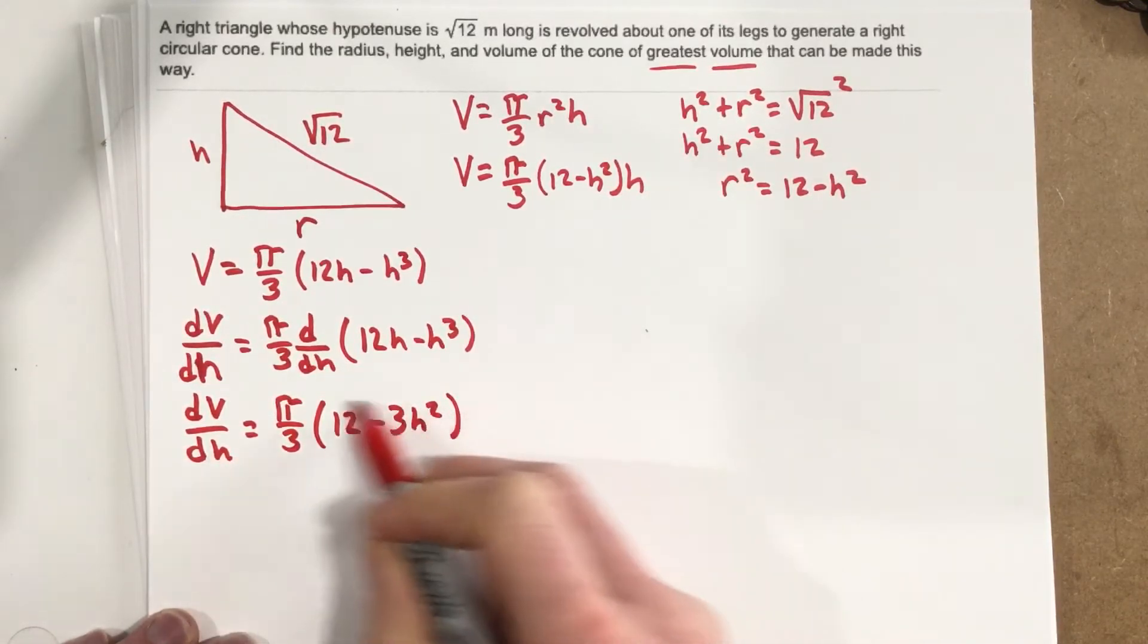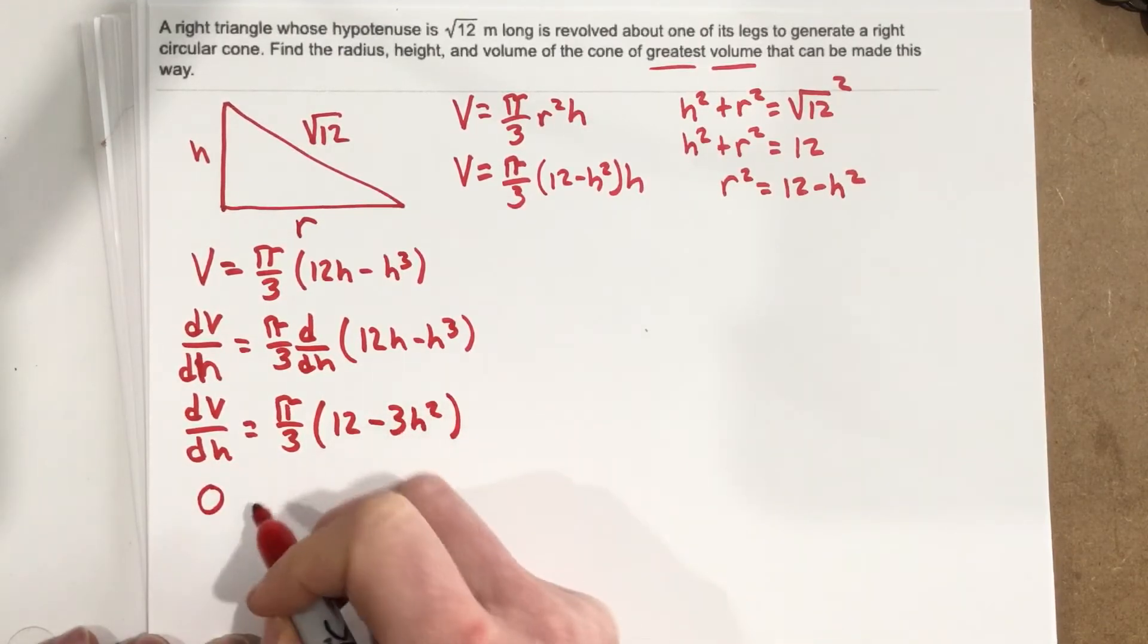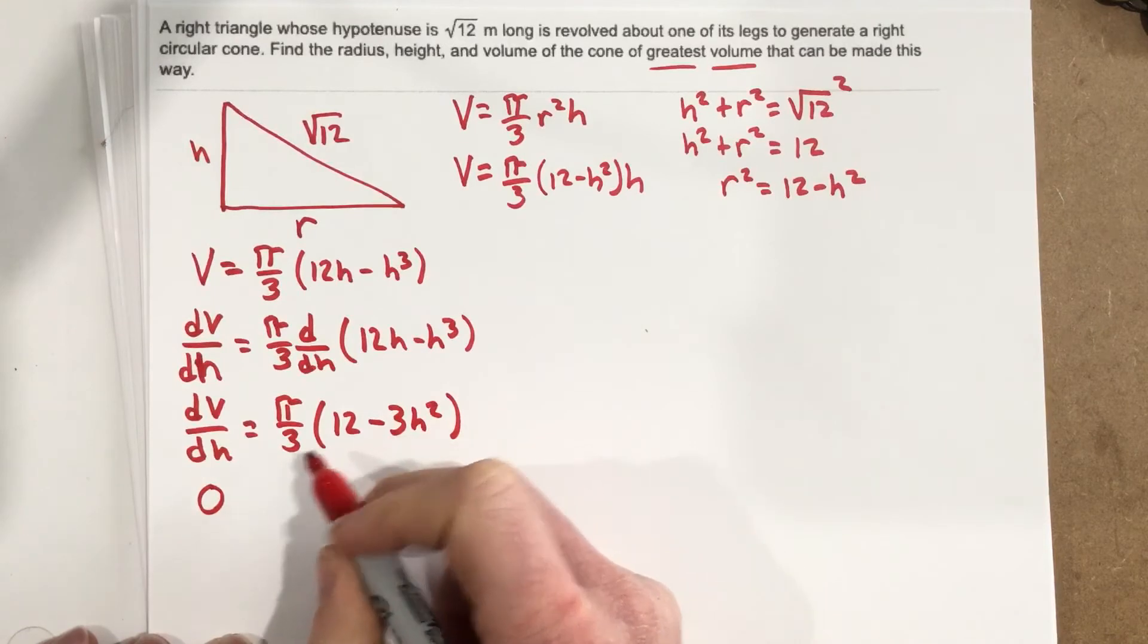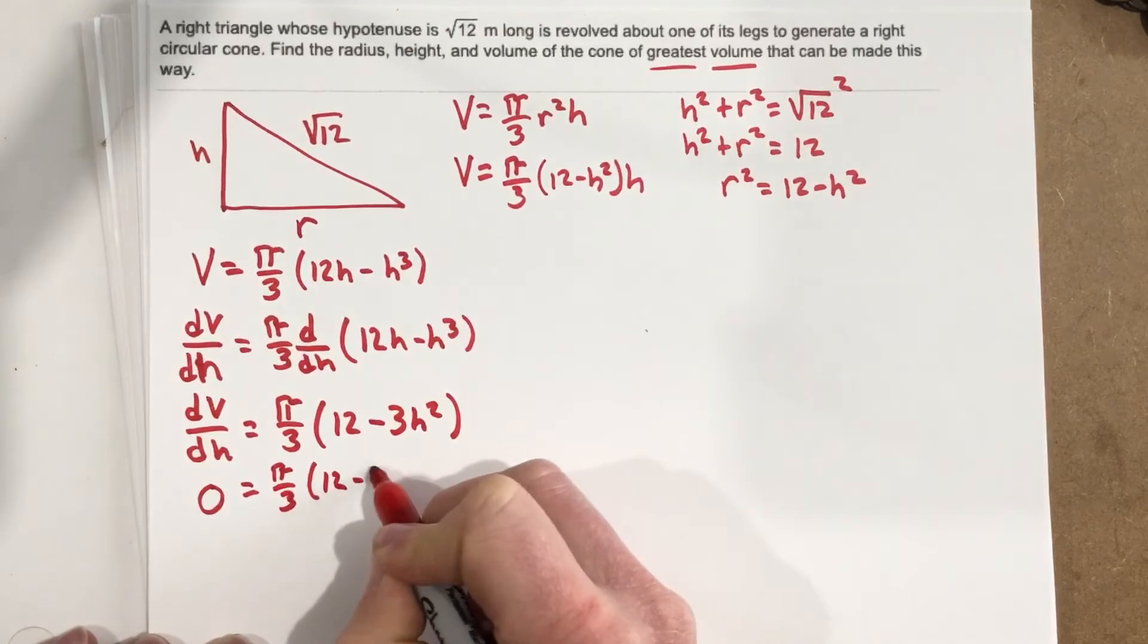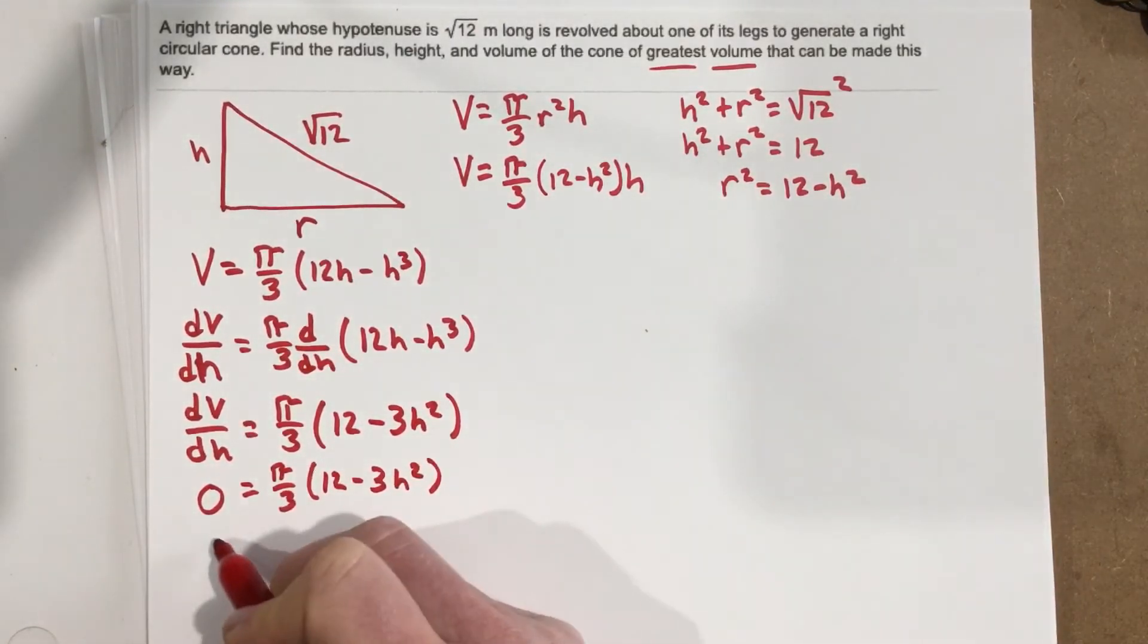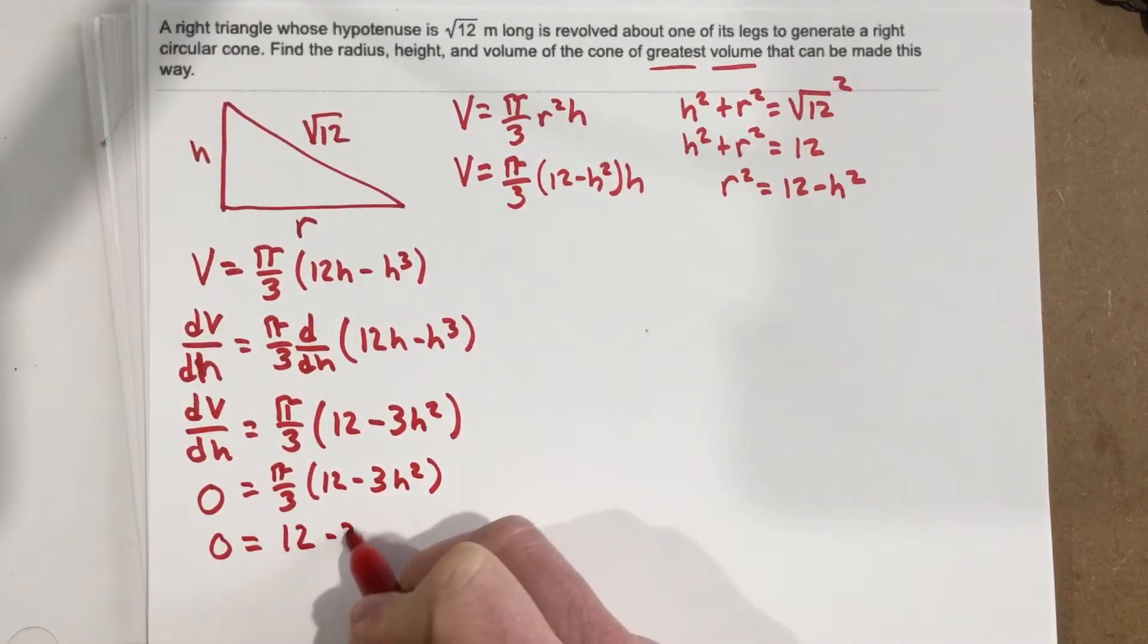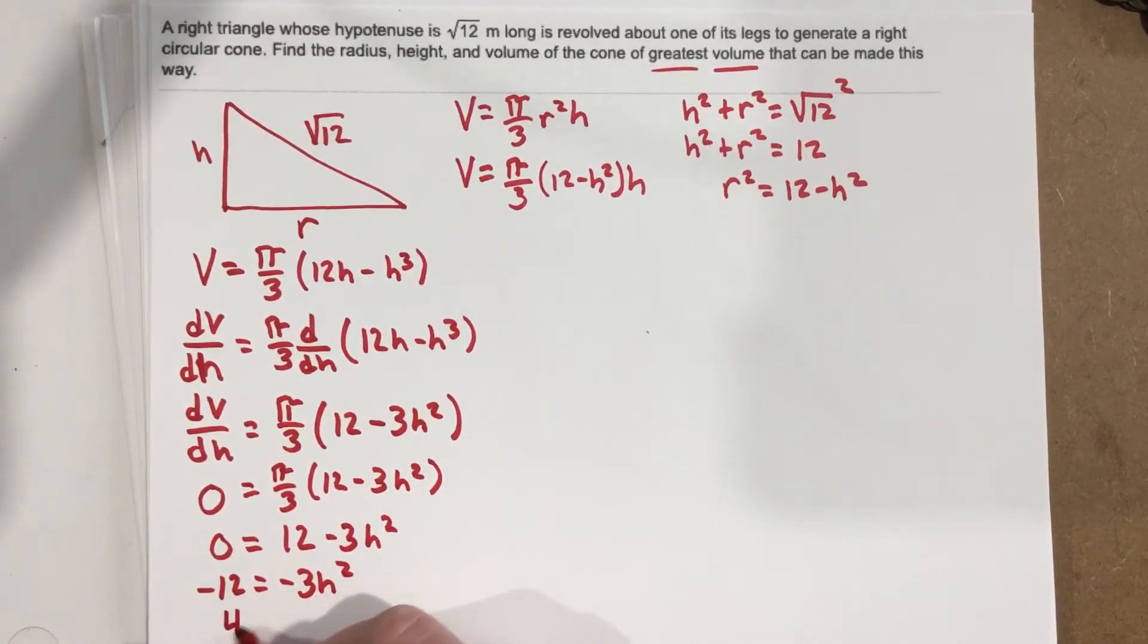Now we have the derivative. We set the derivative equal to 0 to find our max. Notice we have a quadratic, so we will have a maximum here and it's a downward-facing quadratic. So 0 = π/3 · (12 - 3h²). Divide by π/3, you get 0 = 12 - 3h². Subtract the 12, you get -12 = -3h². Divide by -3, you're going to get 4 = h².